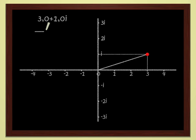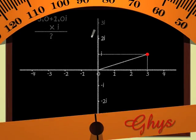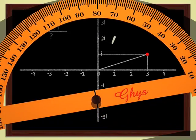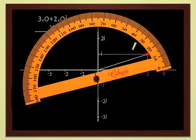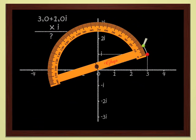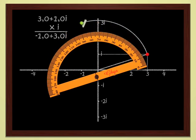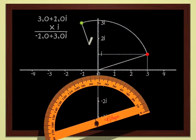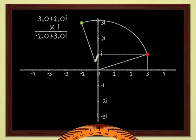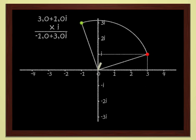Multiplying by i is not difficult either, since we know that i corresponds to a quarter turn. In order to multiply 3 plus i by i, we just have to rotate by a quarter turn. We get minus 1 plus 3i. Not so complicated, these complex numbers.